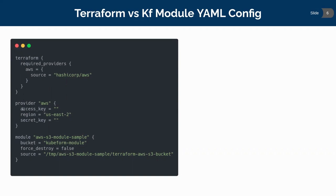The second block is the provider block, which is the specific provider — in this case AWS. We can see the necessary configurations for that AWS provider are given here: access key, region, and secret key.